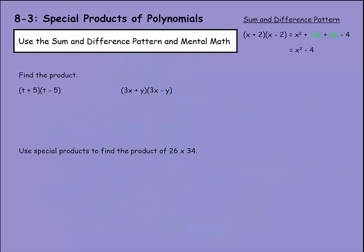Now let's focus on the sum and difference pattern. Whenever you have the same variable and you're multiplying a sum and a difference of the same number, the middle terms cancel. Multiplying x times −2 gives −2x, and 2 times x gives +2x — those cancel. You're left with x squared minus 4 from 2 times −2. The squared term is always positive, and the constant term is always negative because you always have one negative and one positive.